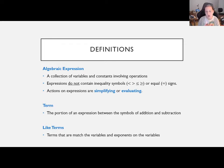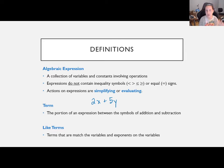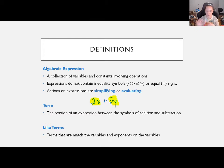You can simplify or evaluate. Let me write an example: 2x + 5y. That's an expression — letters, numbers, symbols, operations. Terms are the things separated by the plus signs or operations. This has two terms: 2x and 5y. Like terms are ones that match in their variables and have the same exponents on those variables. In the example 2x + 5y, these are not like terms because they're different letters.